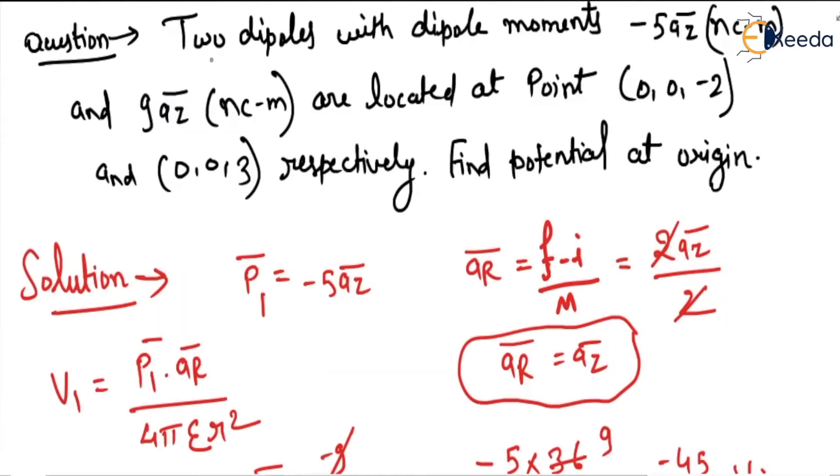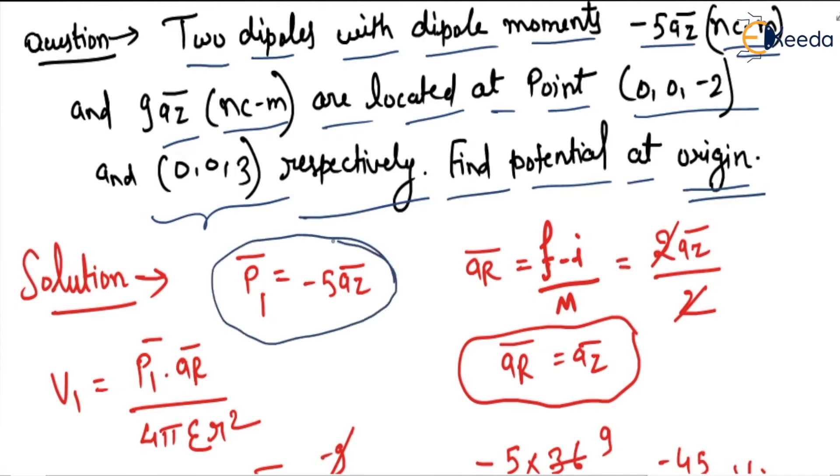Question: Two dipoles with dipole moments -5az nanocoulomb-meter and 9az nanocoulomb-meter are located at point (0,0,-2) and (0,0,3) respectively. Find the potential at origin. Here dipole moment 1